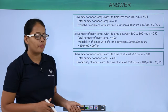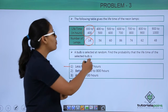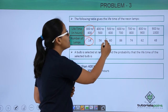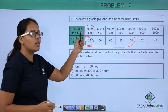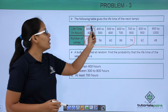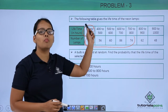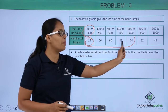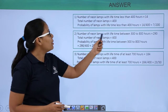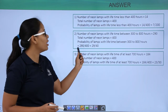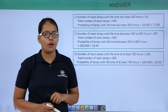In the second problem, they ask for between 300 hours to 800 hours. So you are going to sum all the values: 14 plus 56 plus 60 plus 86 plus 74, because this gives you the time interval of 300 to 800 hours — more than 300 and less than 800. The number of lamps in this range sums to 290. With total lamps being 400, the probability is 290 divided by 400, which gives you 29 is to 40.